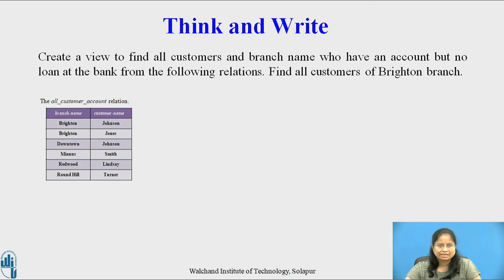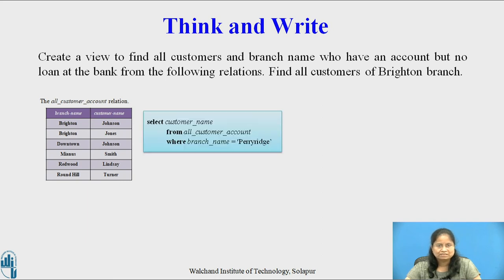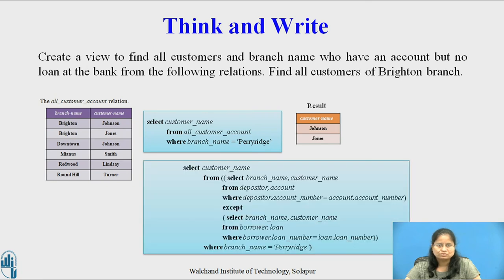Now consider the second part: find all the customers of the Braynton branch. The query is: SELECT customer_name FROM all_customer_account WHERE branch_name = 'Braynton'. The result contains the customer names Johnson and Jules. In the view expansion, the relation all_customer_account in the FROM clause is replaced by SELECT branch_name, customer_name FROM depositor, account WHERE depositor.account_number = account.account_number EXCEPT SELECT branch_name, customer_name FROM borrower, account.